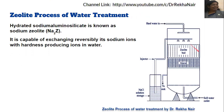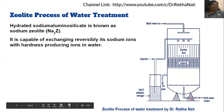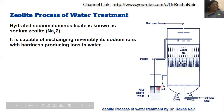Here is the picture for the zeolite process. There is a provision for hard water in, and this is the zeolite bed. These are the gravels to support the zeolite bed, and then the soft water will come out from here. There is an injector of sodium chloride, and the washings will be sent to the sink through this provision.